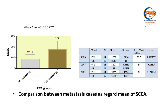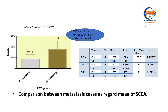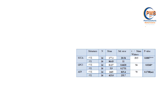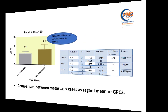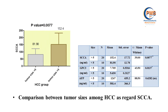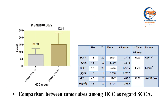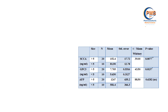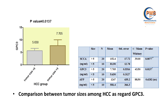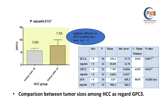Comparison between metastatic cases showed a highly significant difference of squamous cell carcinoma antigen and a significant difference of Glypican-3 in metastatic cases. Comparison between tumor sizes among HCC patients showed a highly significant difference of squamous cell carcinoma antigen and a significant difference of Glypican-3 in patients with tumor size greater than 5.